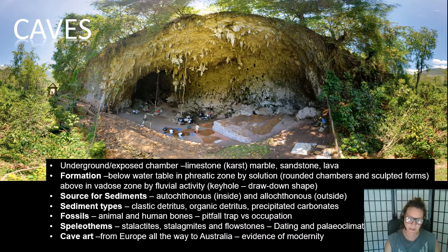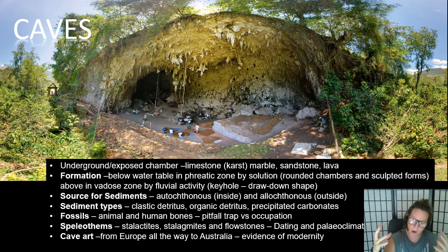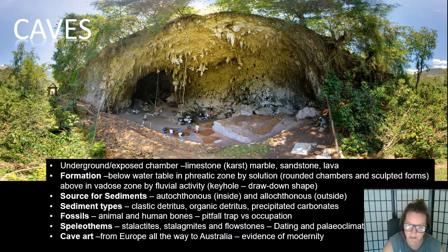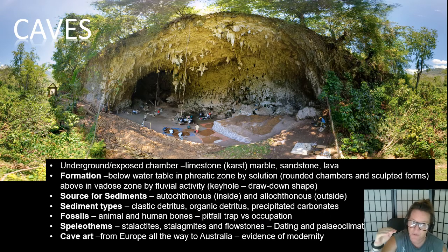When caves are formed, they're formed either below the water table in what's called the phreatic zone, formed by solution. Rainwater and carbon from the soil combine to form a weak carbonic acid, which dissolves limestone. If this dissolving continues, it starts with a tiny crack in the limestone and can build into a massive chamber - what we call dissolution. Caves can also develop in the vadose zone, which is above the water table.